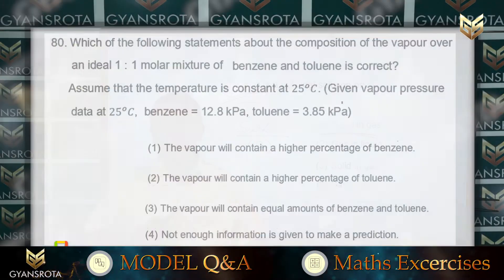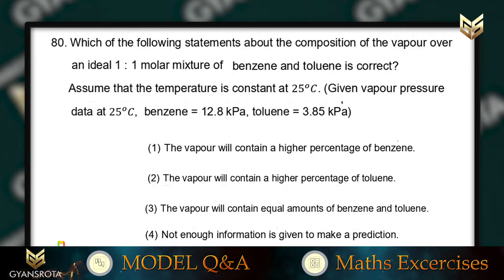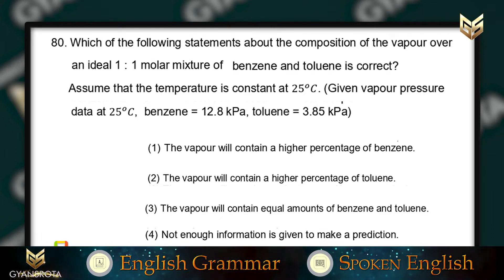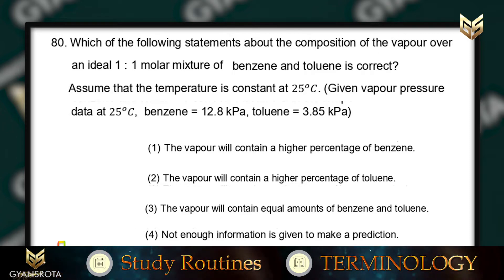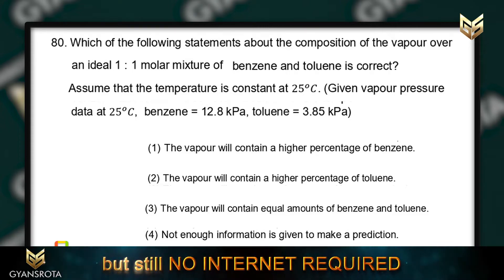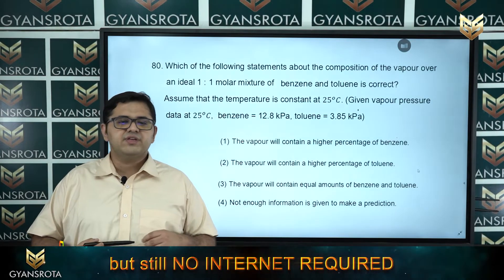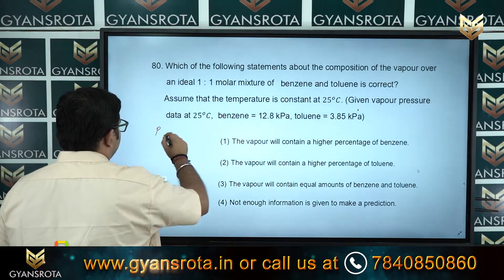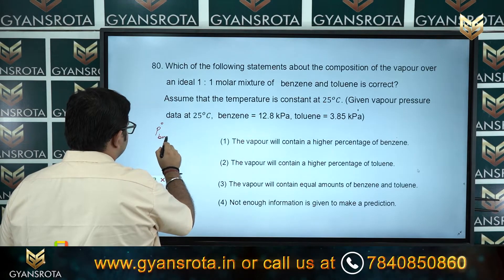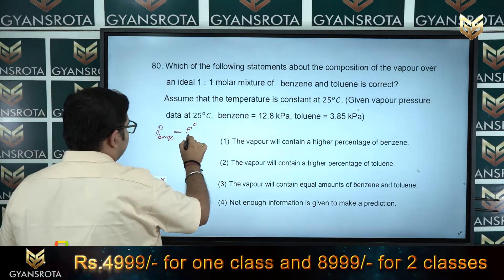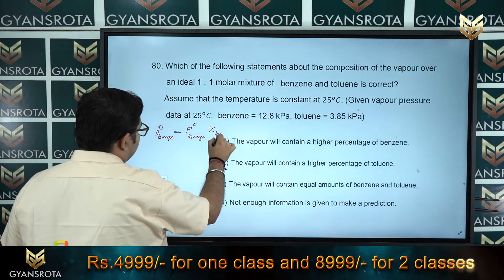Question number 80: which statement about the composition of vapour over an ideal 1:1 molar mixture of benzene and toluene is correct, at constant temperature 25°C? Given: vapour pressure of benzene = 12.8 kPa and toluene = 3.85 kPa. Moving to the solution: we use the formula p_benzene = p°_benzene × χ_benzene, where χ is the mole fraction.